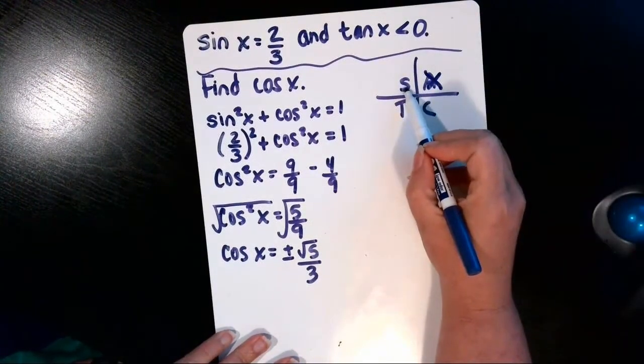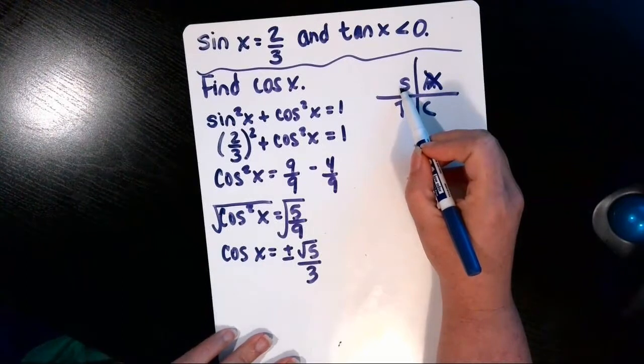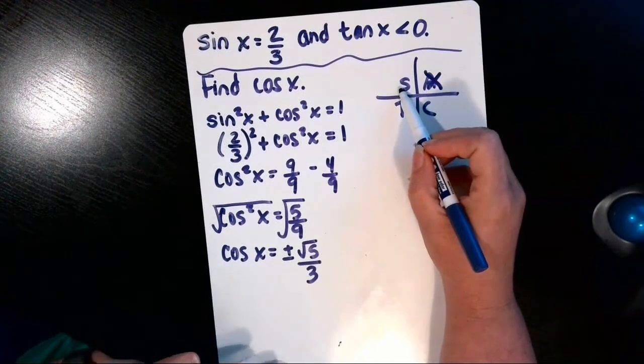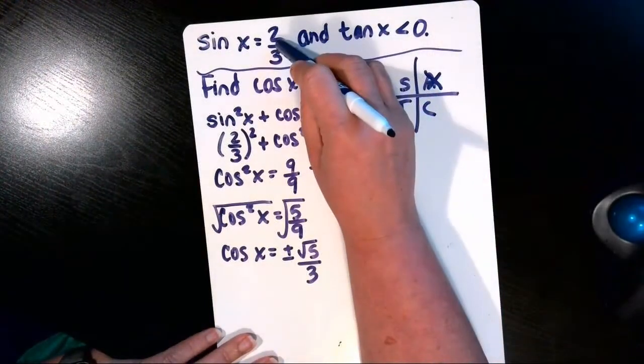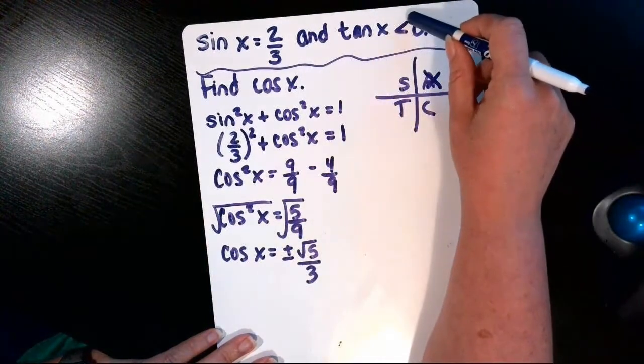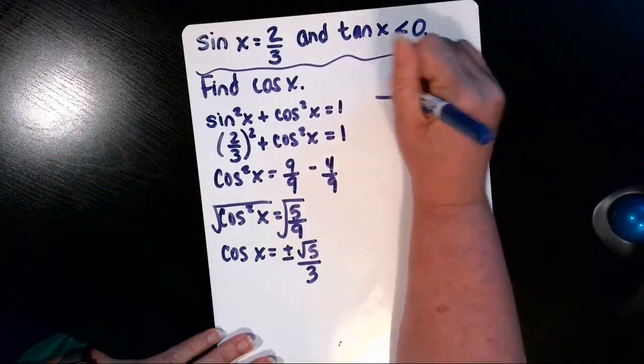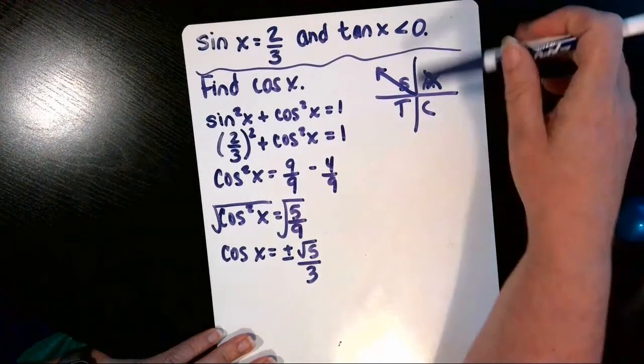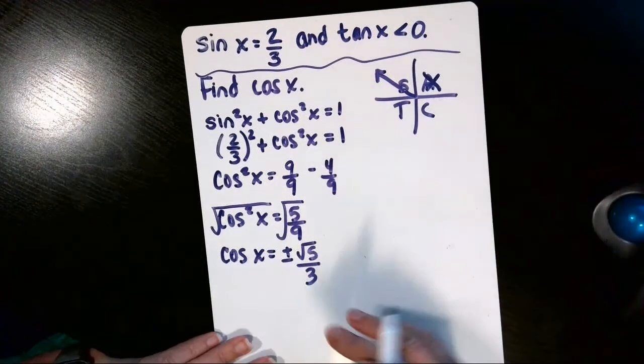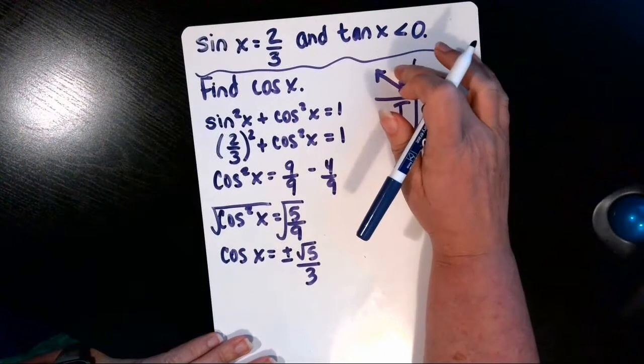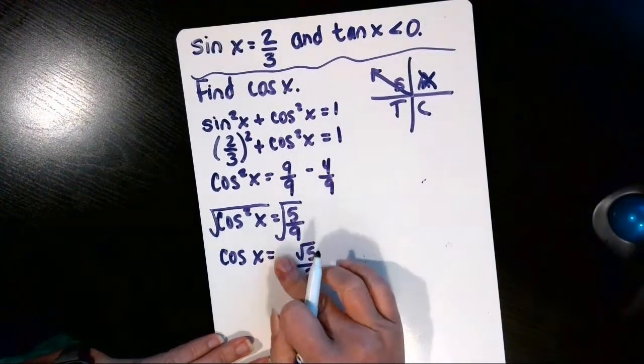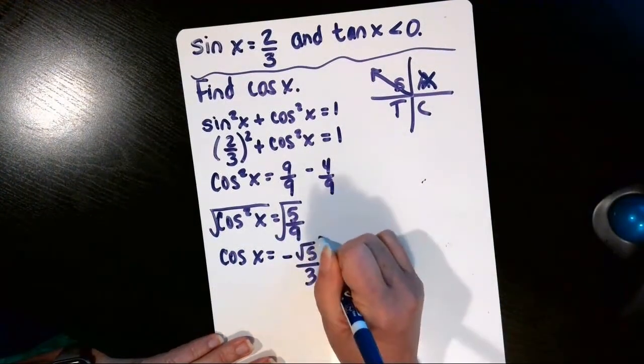Then the S is that sine and its reciprocal cosecant are positive in quadrant two. Our given information is that sine is positive, tangent's negative. That means we're in quadrant two because sine is positive but tangent's negative in quadrant two. So that means cosine is also negative there. So we're going to throw out the positive, keep the negative.